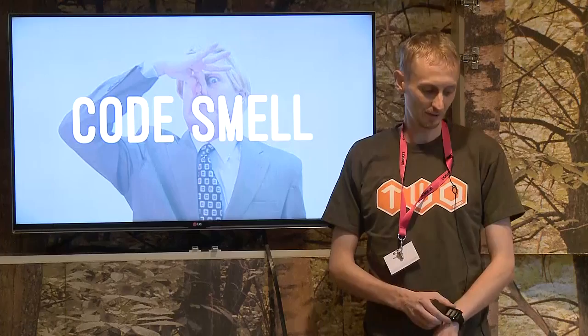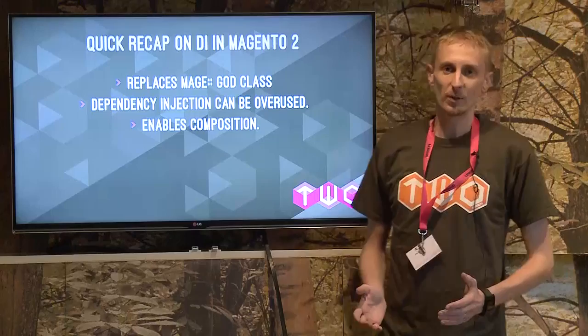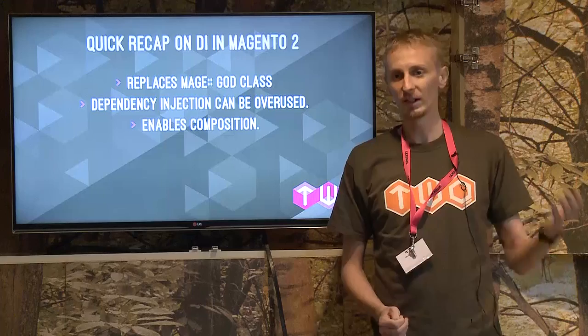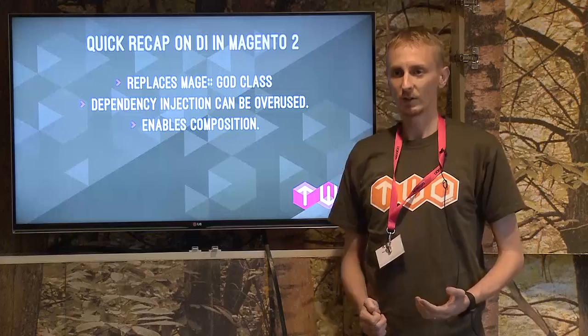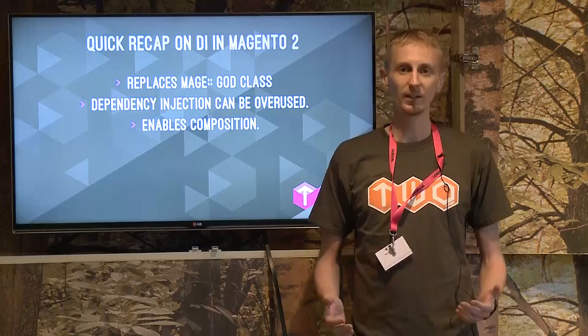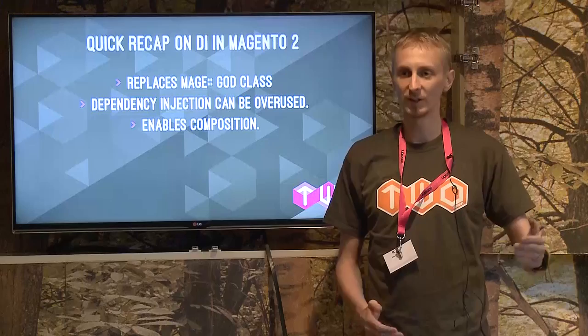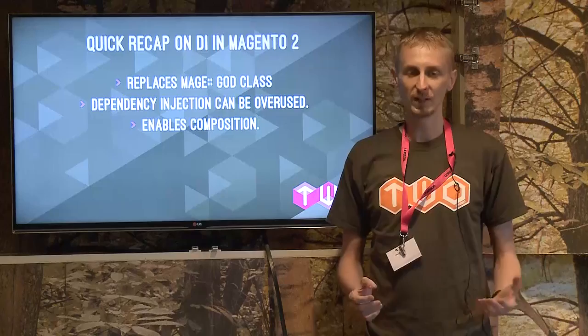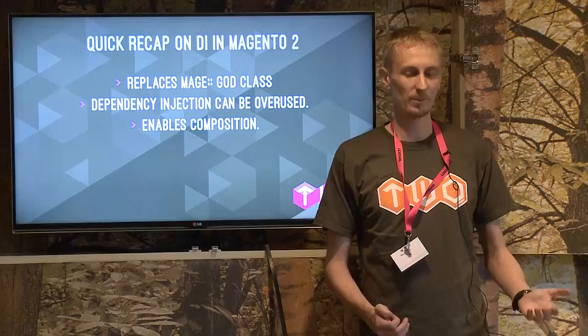Dependency injection in Magento 2 replaces the Mage god class. No longer have we got the Mage factory doing everything for us — we're taking the responsibility of instantiating objects away from Mage and injecting into the classes. But dependency injection can be overused. It's quite easy to inject far too much into a controller, believing it's the single entry point into your application following MVP. It's better to move that stuff out into models and repositories, keeping classes small and lightweight, doing the one thing they should be doing well. By using composition, we can compose our modules of the functionality they actually require, moving away from Magento 1's preference for inheritance.